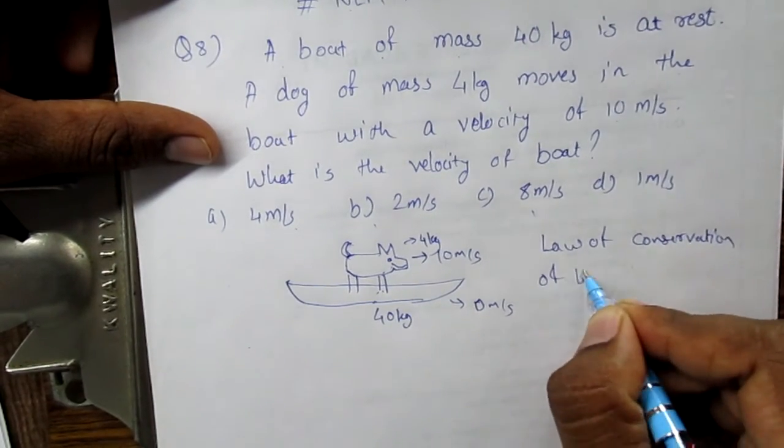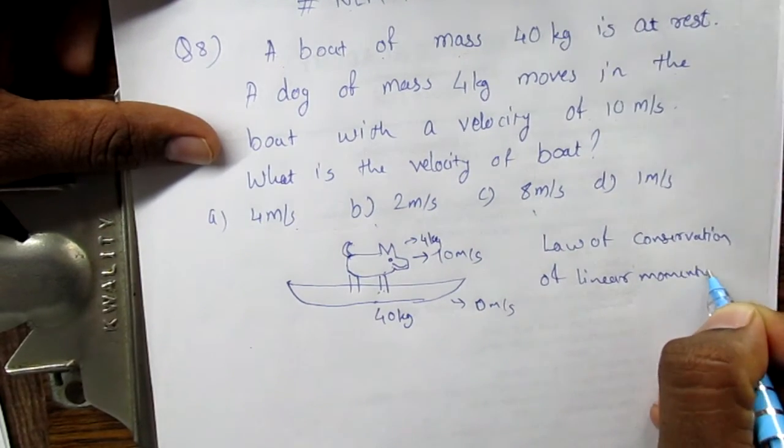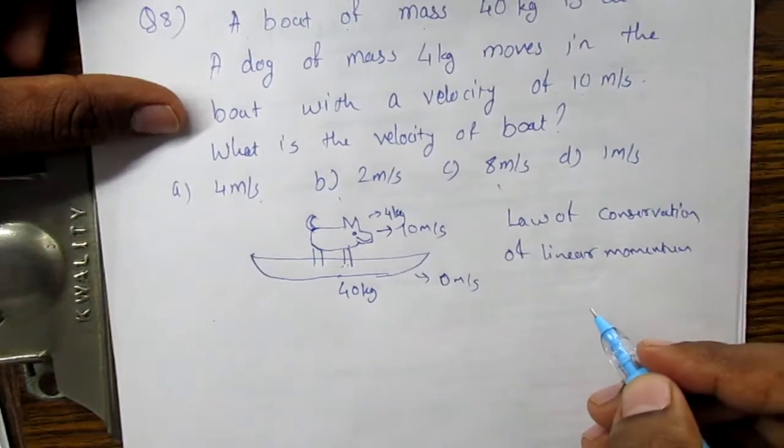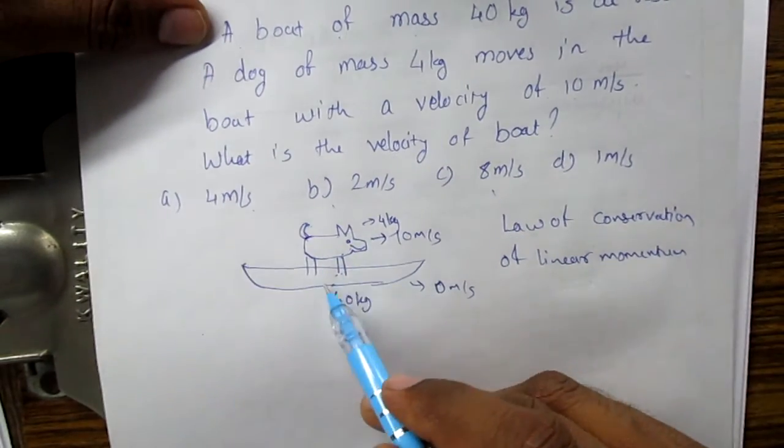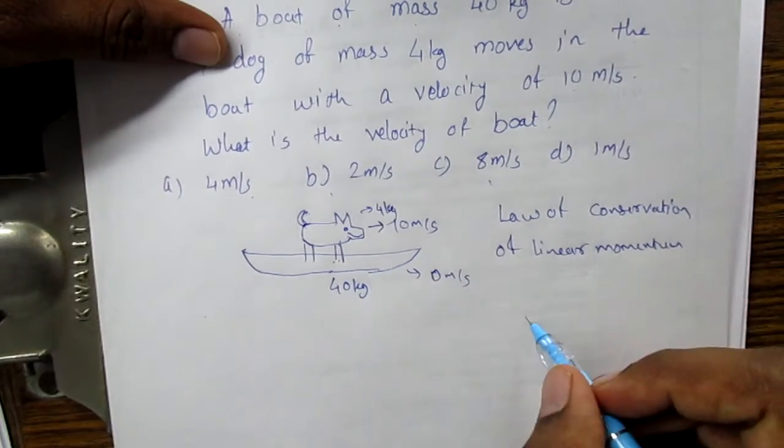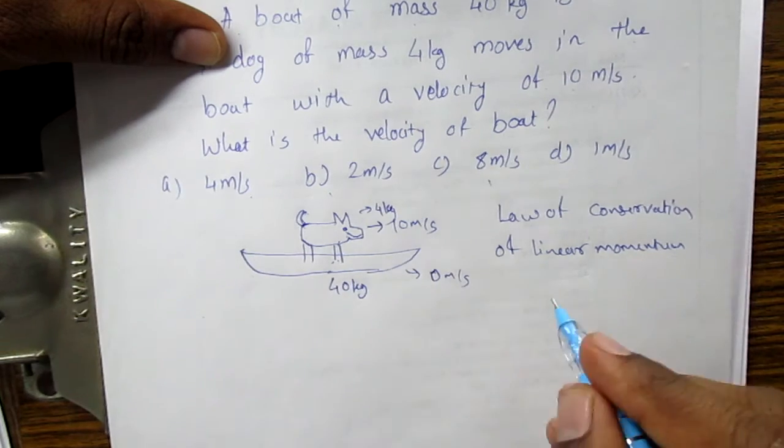The law states that the linear momentum of an isolated interacting system is conserved. This means the momentum of the dog should be equal to the momentum of the boat.